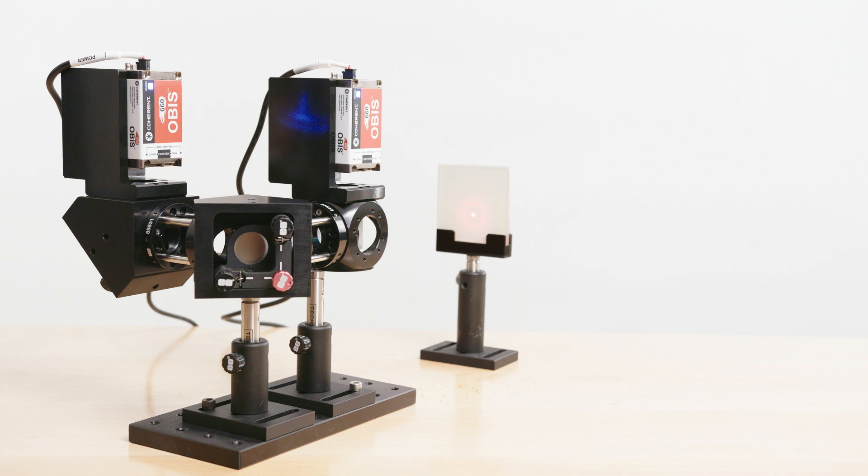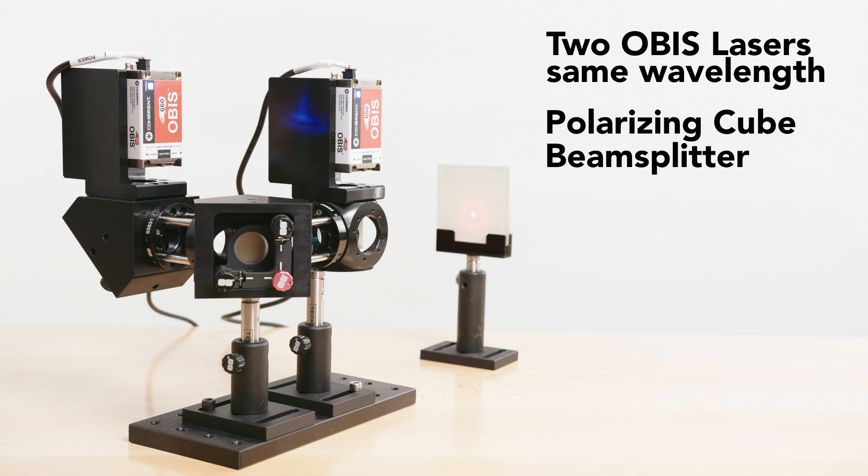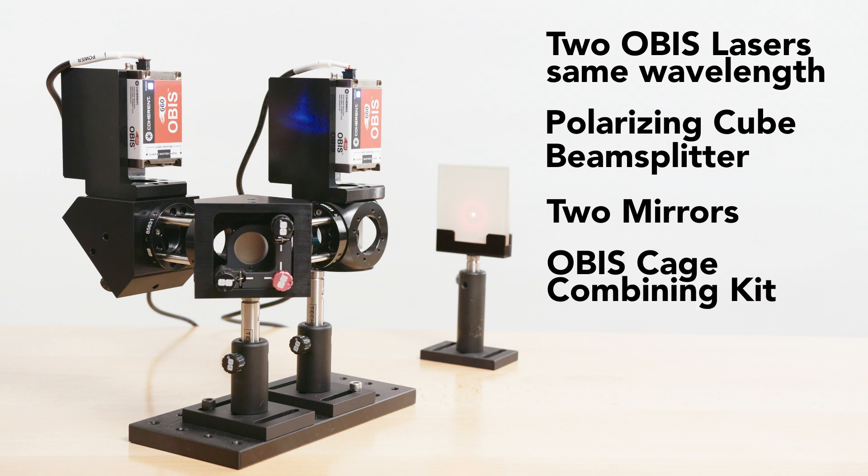In order to combine two beams using polarization, you will need the following: two OBIS lasers with the same wavelength, one polarizing cube beam splitter, two mirrors to make one set of folding mirrors, and finally one OBIS cage combining kit.